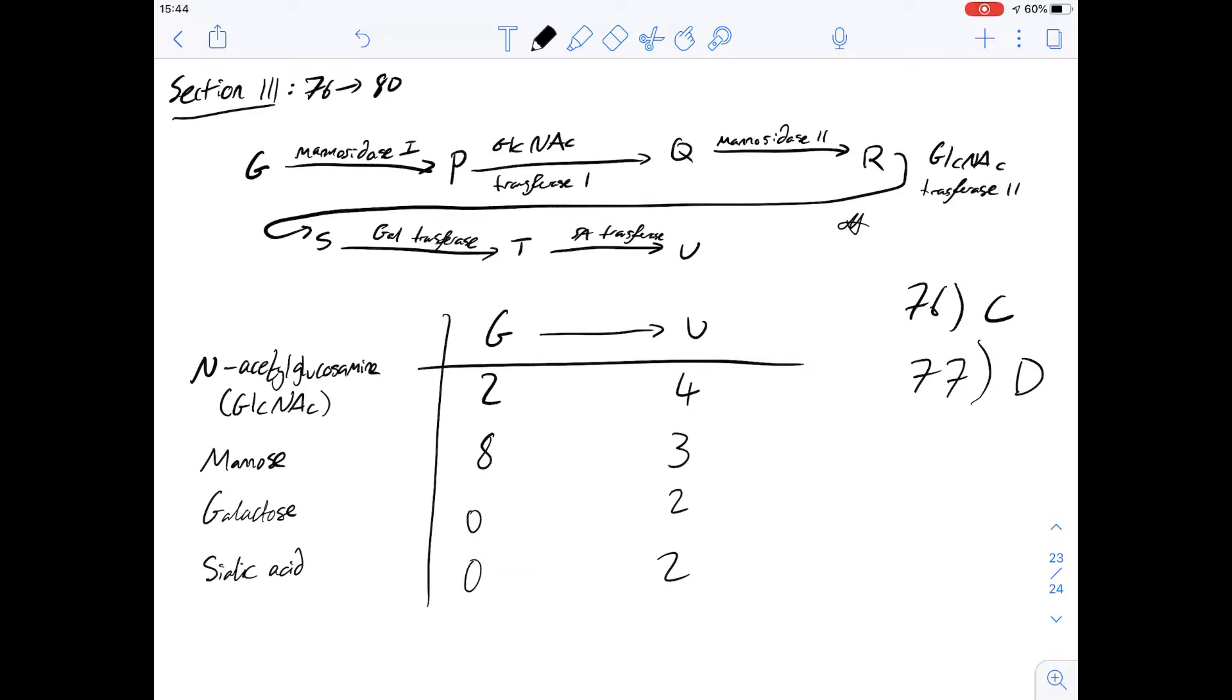78 asks which of the intermediate substances contain galactose. Well there's only one enzyme with galactose in the name and it acts on T therefore the only intermediate that would contain galactose would be T. It won't be U obviously because it's not an intermediate it's the final product so the answer for 78 is going to be A.